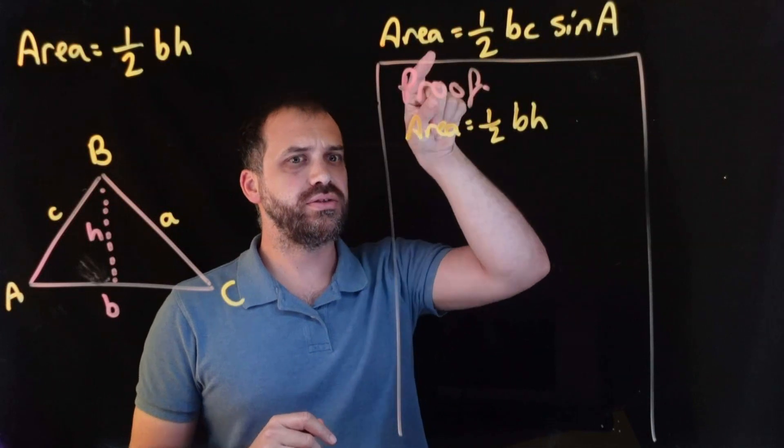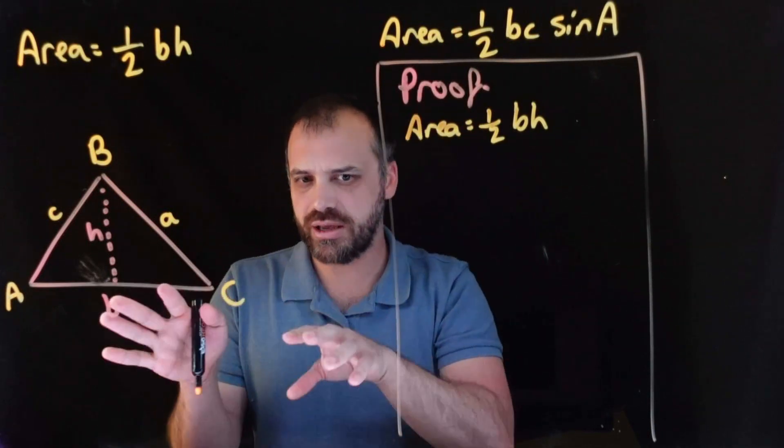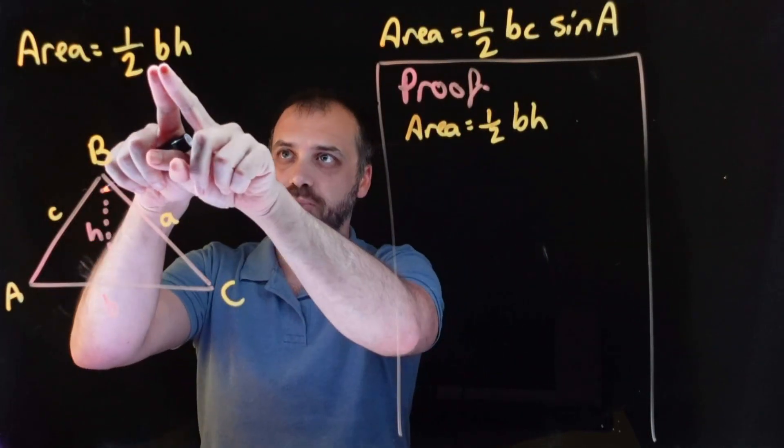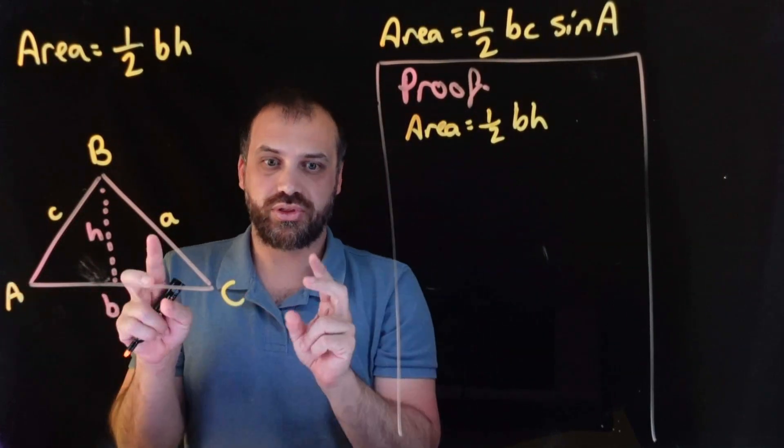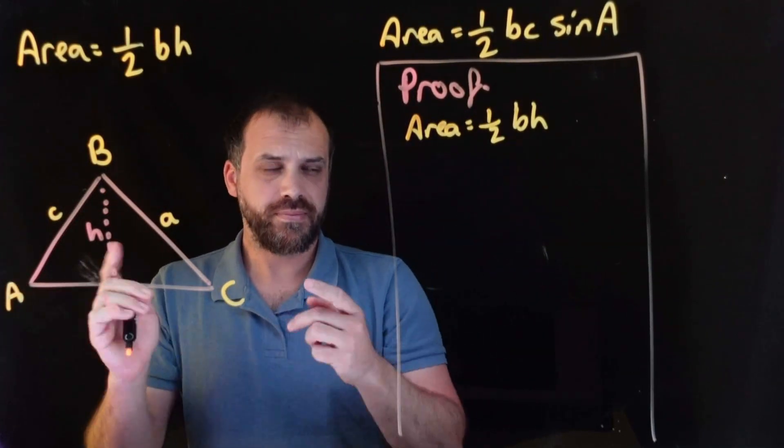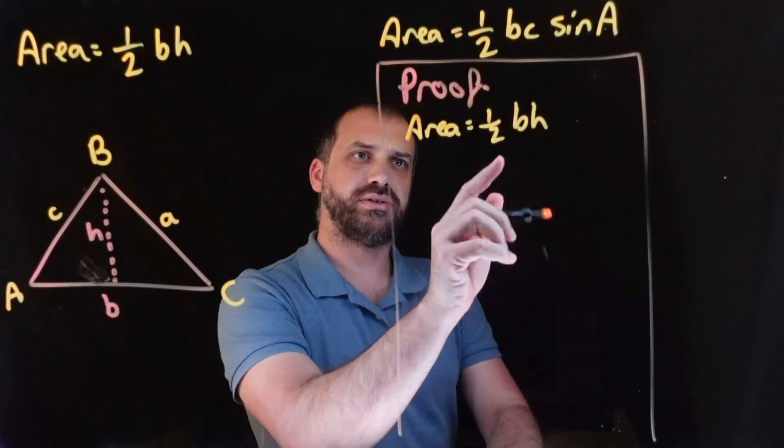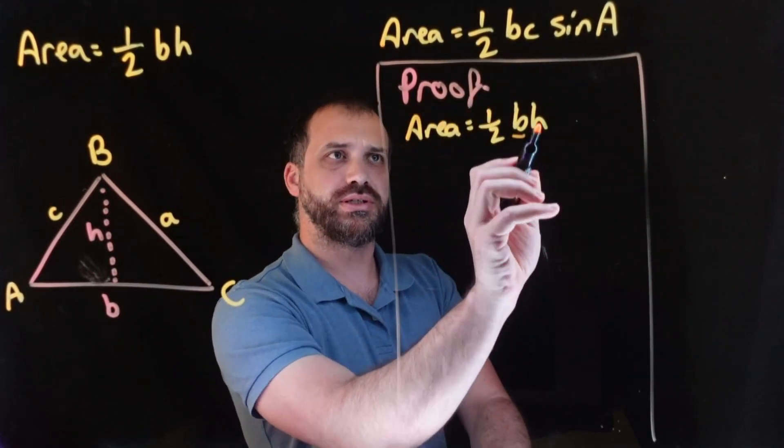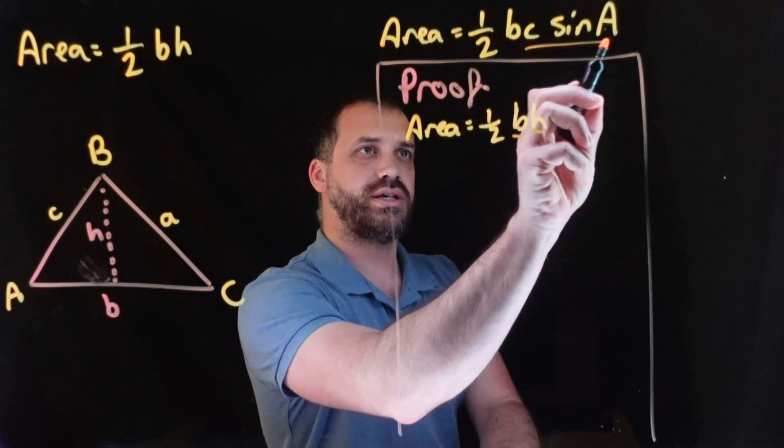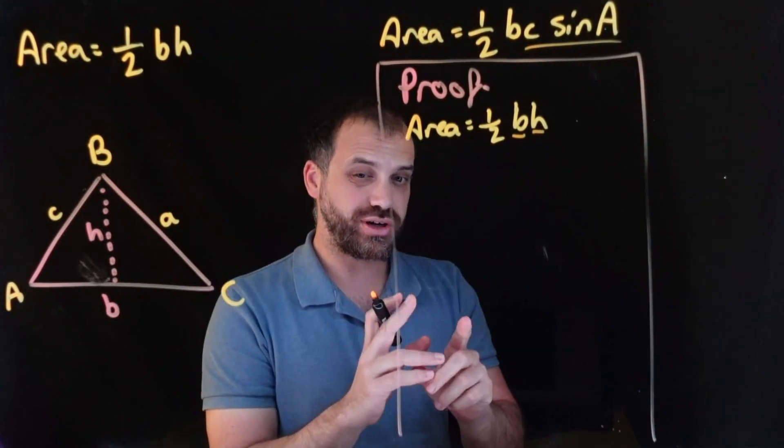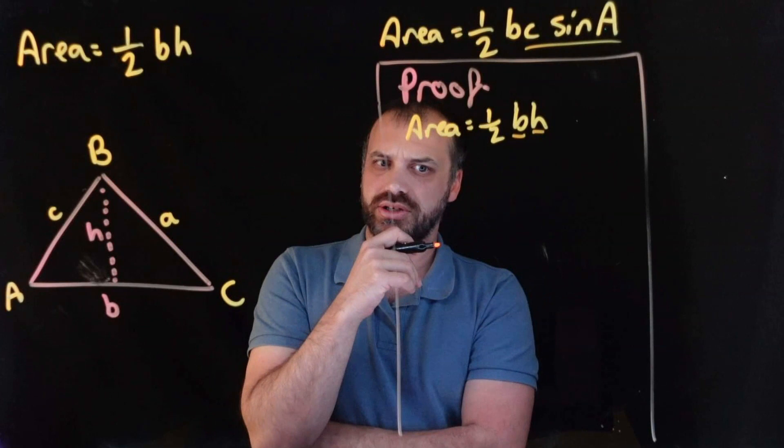You can see that they look very similar, right? And I've labeled my triangle strategically so that the base lines up with the thing that I'm calling B. It's this H, right? The difference in these formulas is the H. H is equal to C sine A.